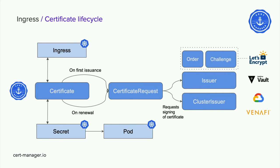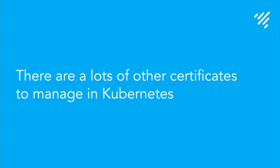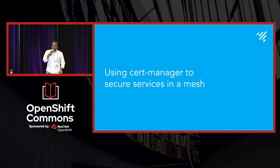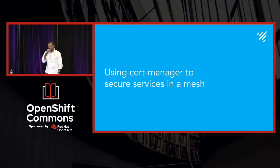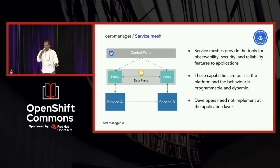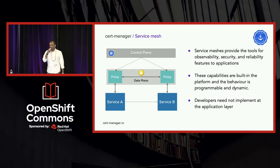A lot of the organizations and customers we work with use cert-manager, but there are many places where certificates need to be managed in Kubernetes. In this lightning round session, I wanted to quickly talk mostly in the context of a service mesh. The reason is that the majority of our OpenShift customers today are rolling out service mesh — either Red Hat Service Mesh or independently rolling out Istio directly. Without going too deep into what a service mesh is: there's a data plane, there's a proxy, and data flows across it.